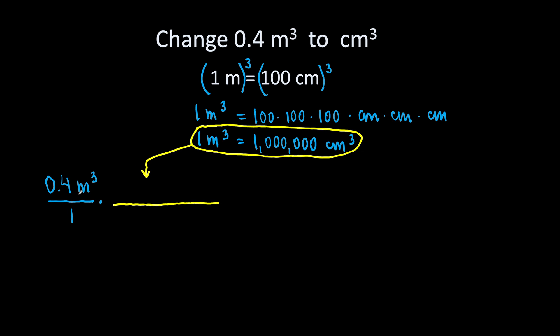So, we have cubic meters on top in the numerator. I will write 1 cubic meter on the bottom in the denominator and 1 million cubic centimeters on top.